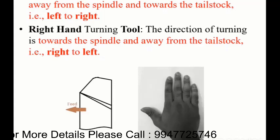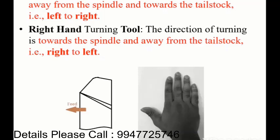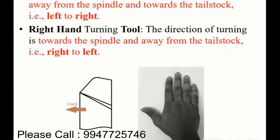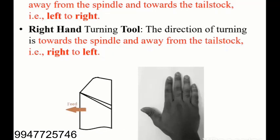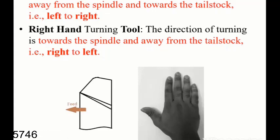The direction of turning is away from the spindle and towards the tailstock. The spindle is at the headstock side, not the tailstock side. We will go with the right hand tool as the answer.